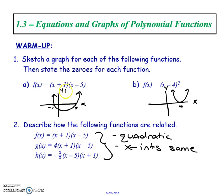Since it's in factored form already, I can see where the zeros are, or the x-intercepts. The x-intercepts are not positive 1 and negative 5 — it's negative 1 and positive 5. So it's always the opposites of what's inside each of these brackets.